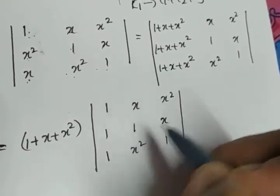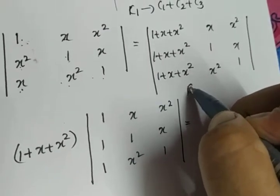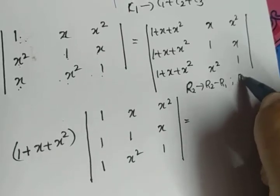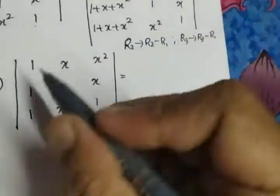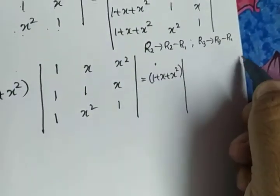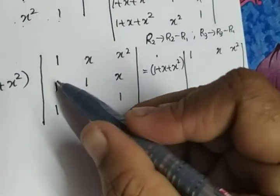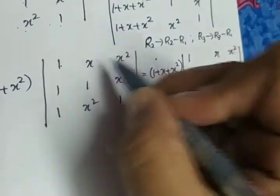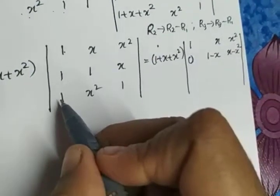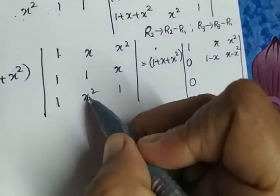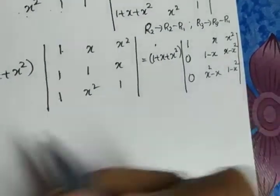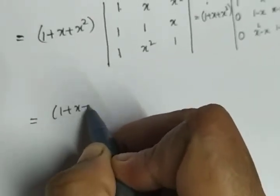Now we will make the lower two entries of the first column zero using row operations: R2 → R2 - R1 and R3 → R3 - R1. The first row remains [1, x, x²]. Second row: 1-1=0, 1-x, x-x². Third row: 1-1=0, x²-x, 1-x². So the determinant now has first column [1, 0, 0].